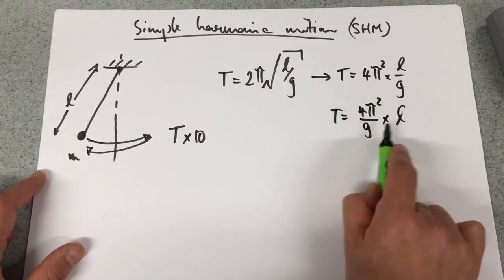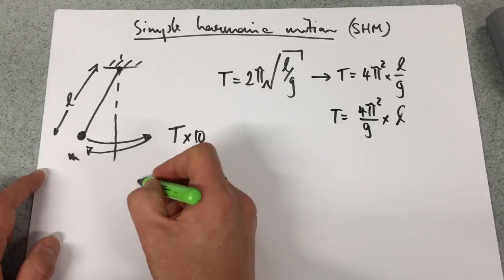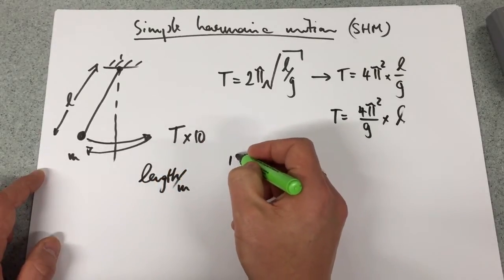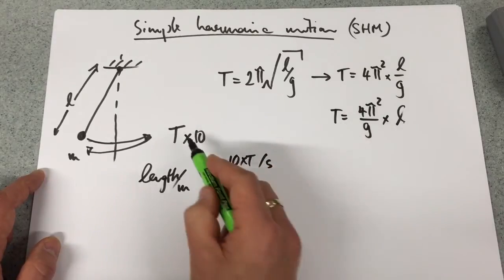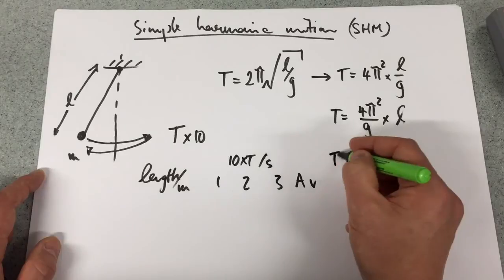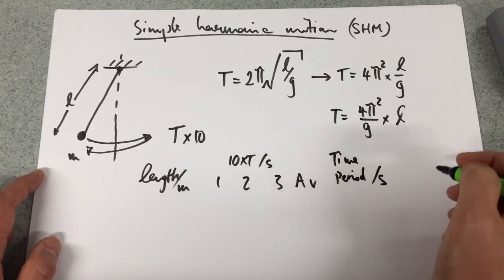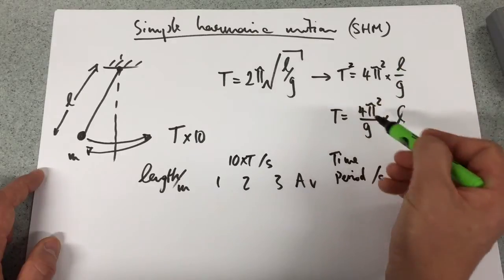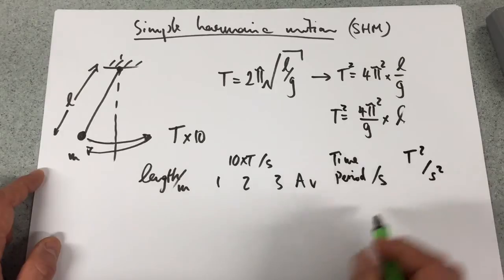Okay, I am changing L, I'm measuring T, independent, dependent. So my table of results will look like this. I'll have my length in meters, then the 10 lots of the time period in seconds, because I'm going to do 10 lots of them, 1, 2, 3 times an average. I then want the time period in seconds, and then finally what I'm looking for, whoops, let me back up here, that should be time period squared. I will want the time period squared in seconds squared.